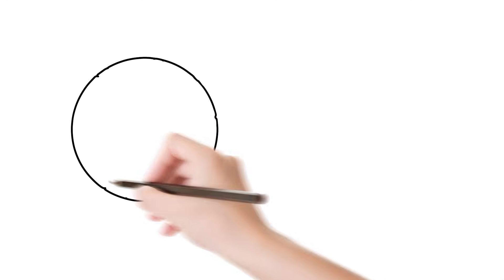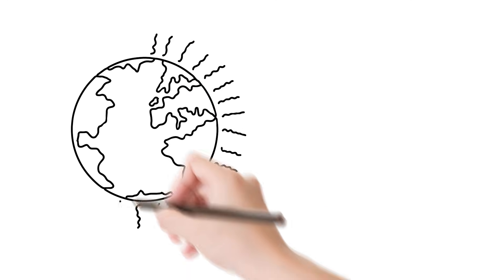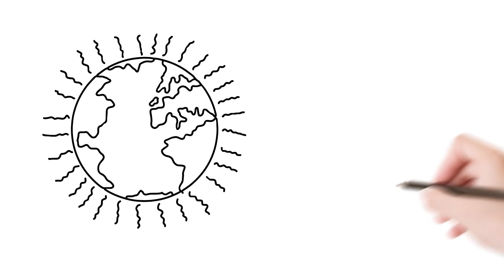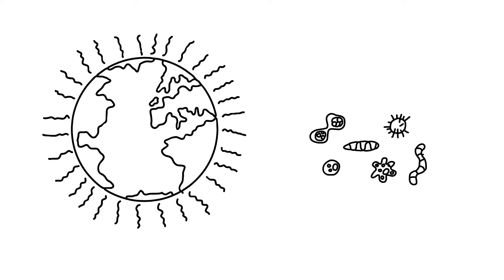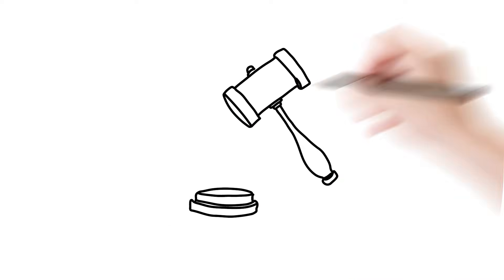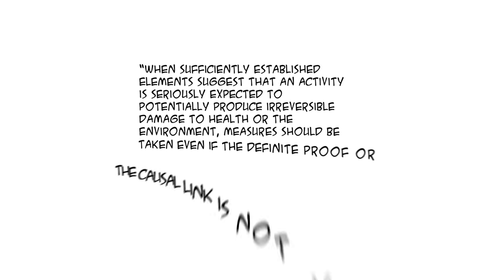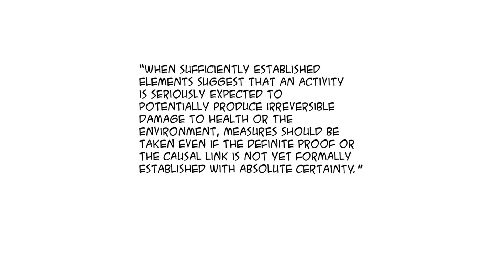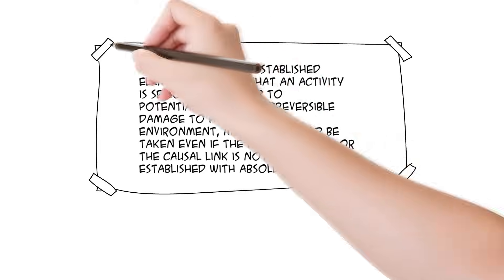However, some types of risks are hard to quantify, either because of the complexity of a system, like in the case of climate change, or because we still lack some of the tools to measure it, like in the case of nanomaterials. When there is no consensus on the level of risk, policy makers sometimes apply the precautionary principle. When sufficiently established elements suggest that an activity is seriously expected to potentially produce irreversible damage to health or the environment, measures should be taken even if the definite proof or the causal link is not yet formally established with absolute certainty.